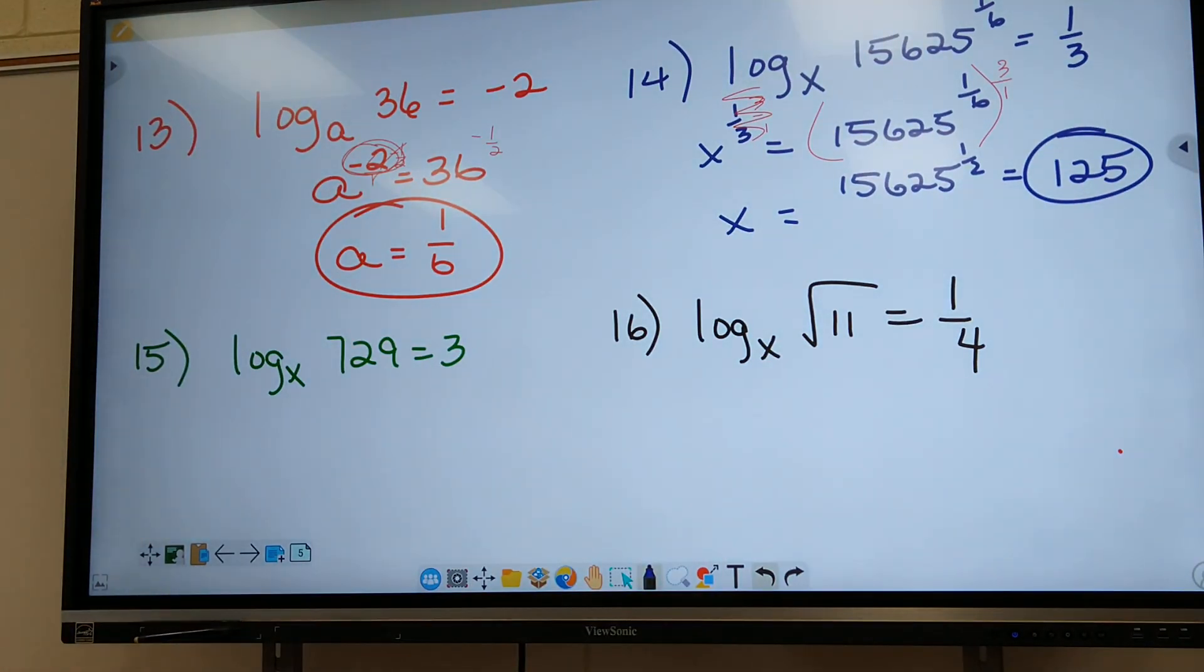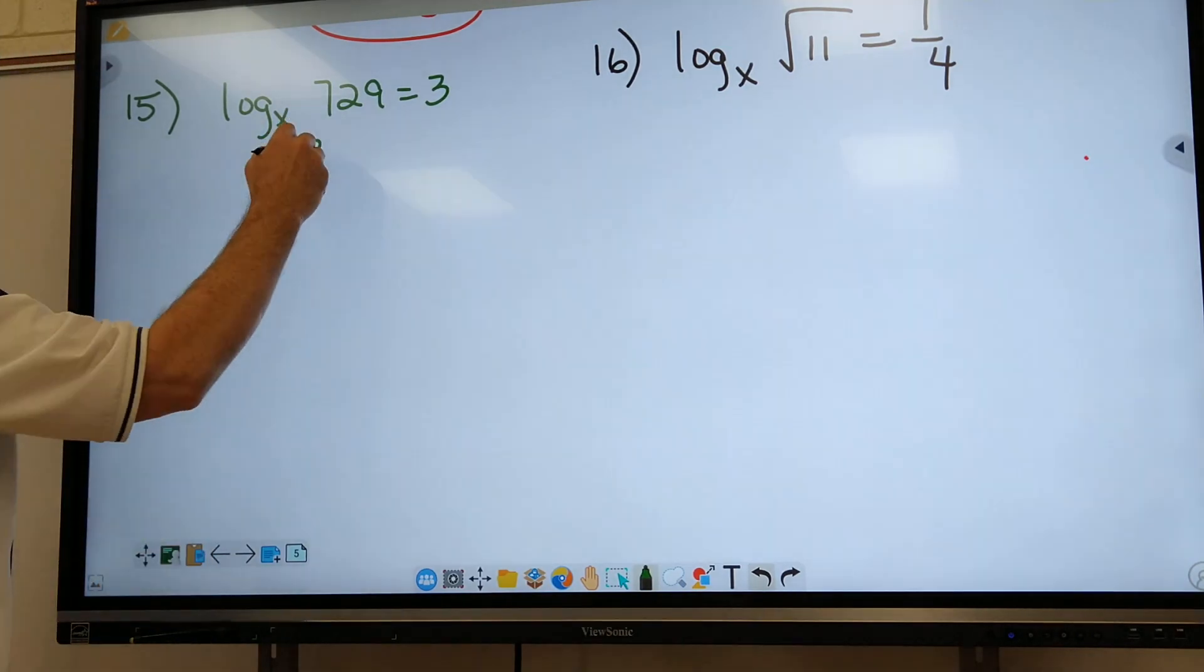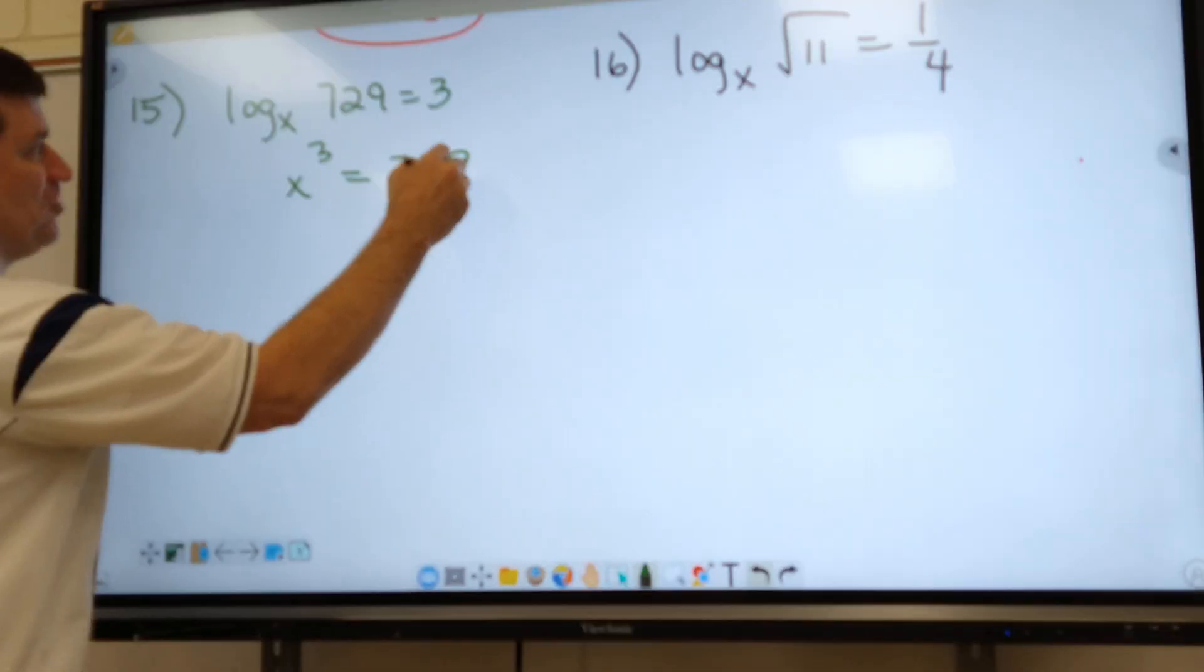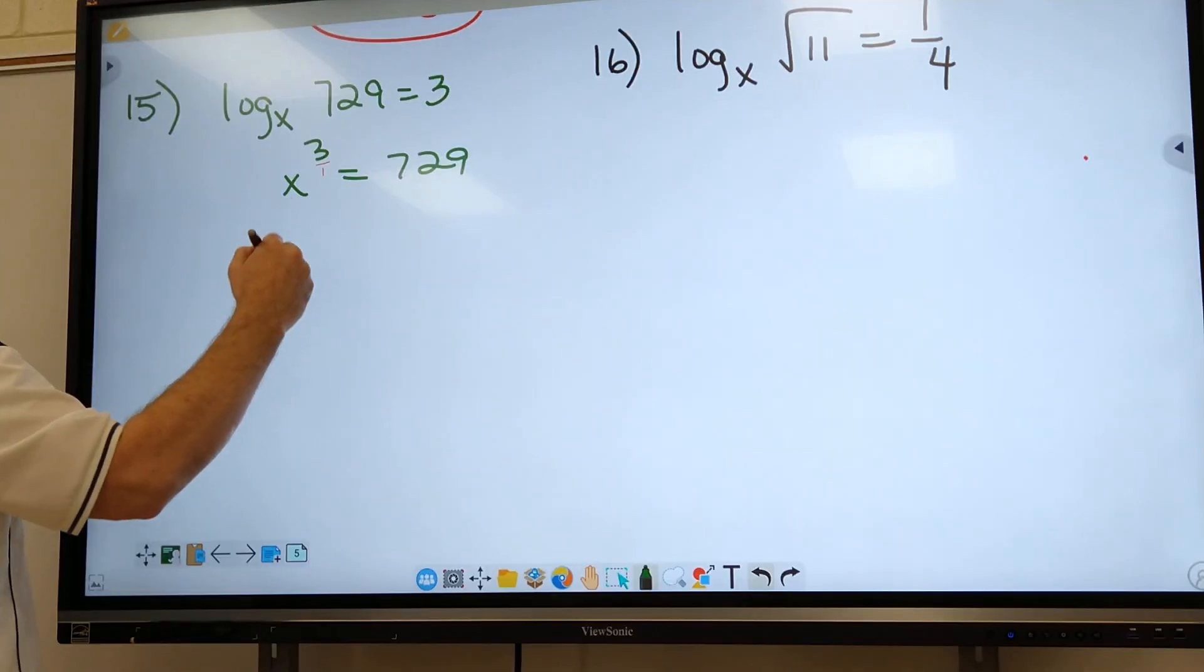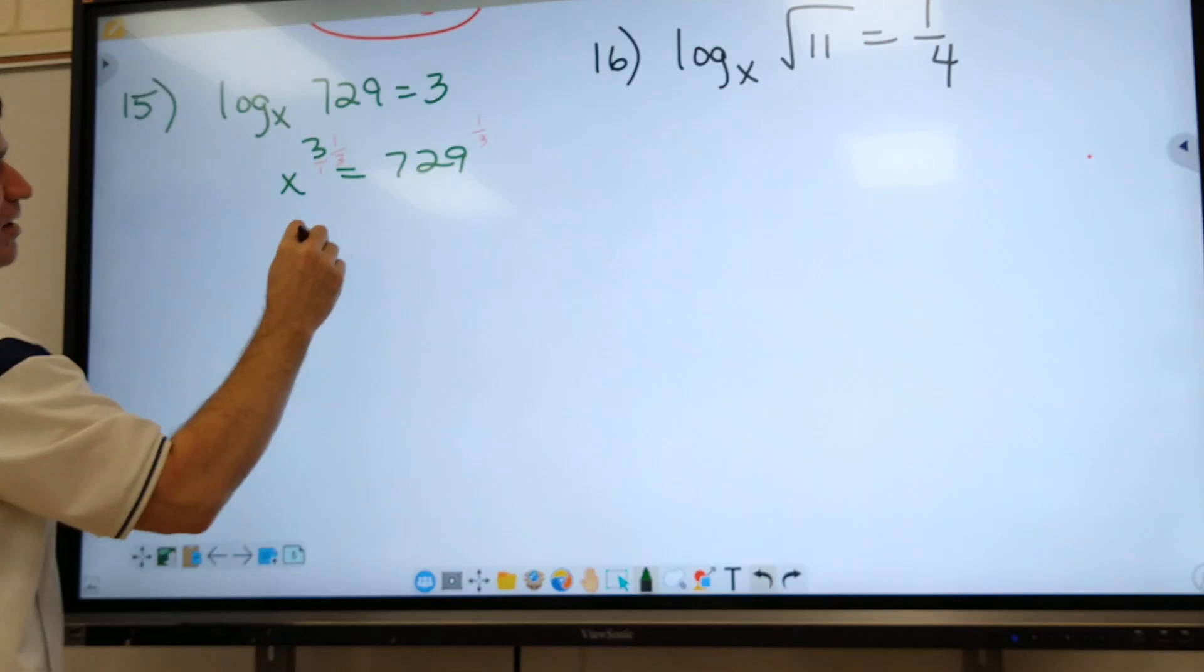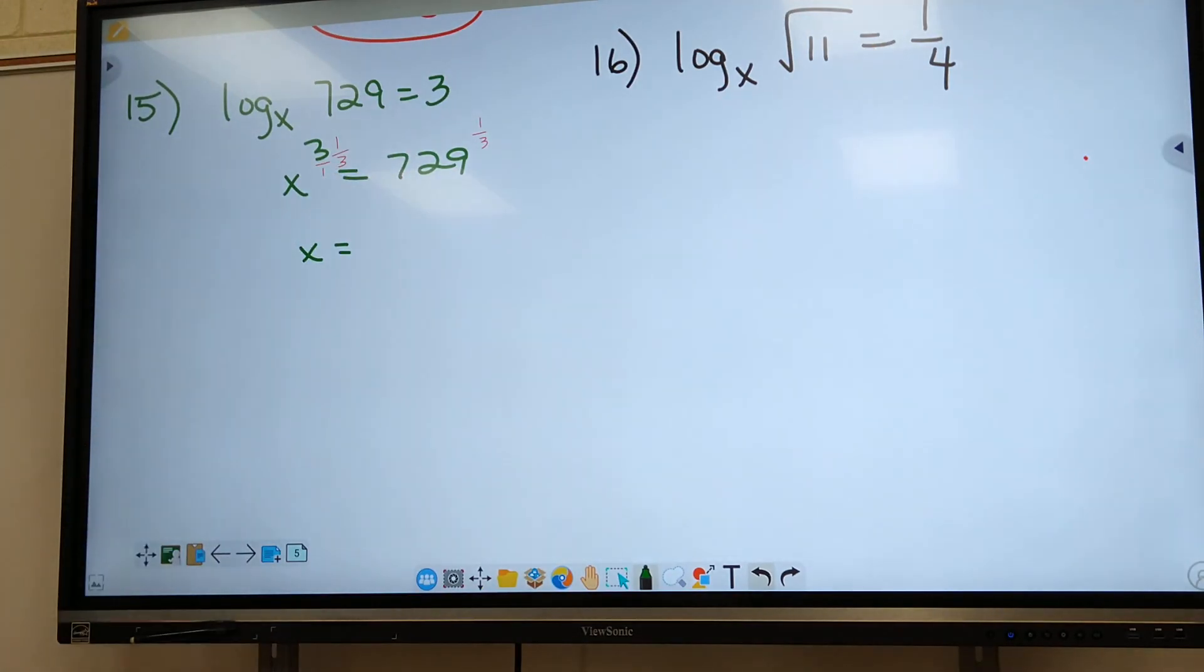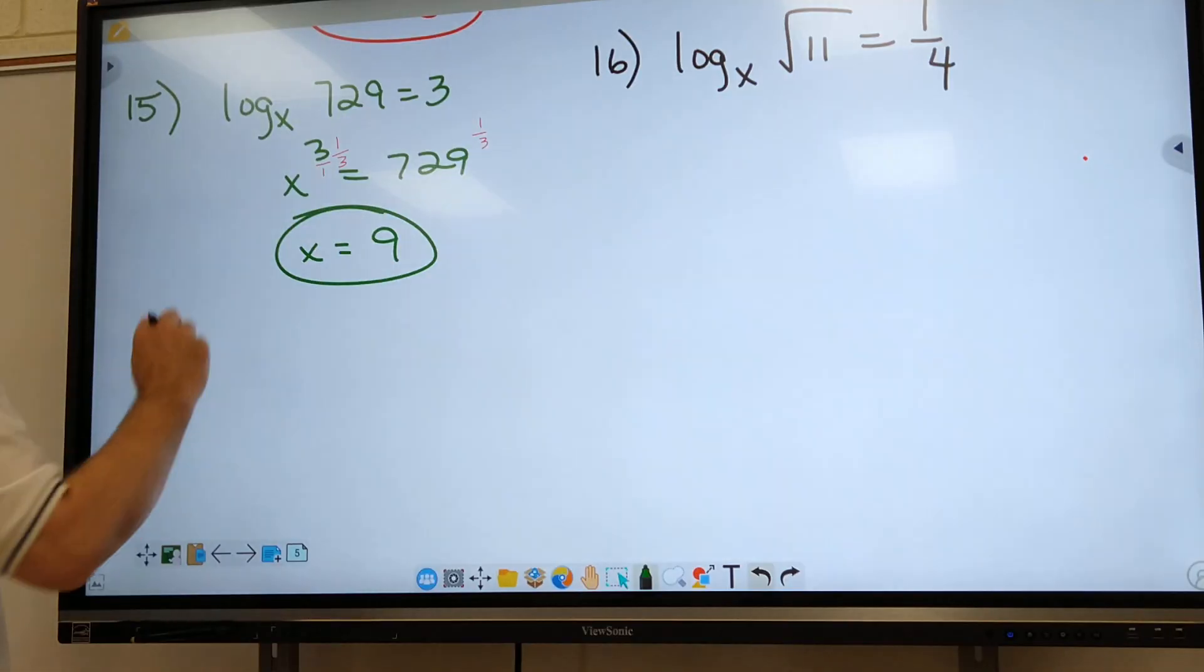All right. So y'all should be able to do 15. 16, you may need some help. I'll do 15. Set it up. All right. 15 is going to be x to the third equals 729. What do I do? Flip it. That's the three over one. Reciprocal would be one-third. And if I do it there, I got to do it there. Type in 729 to the one-third. You get? No. Nine? Everybody agrees with nine? Sorry, Jay.